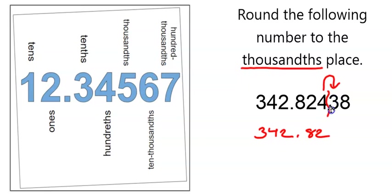If the first number that we're cutting off is 5 or greater, that last number that we're keeping is going to go up. So in this case, 3 is the number that we're cutting off. That is less than 5, so my 4 is going to remain a 4.